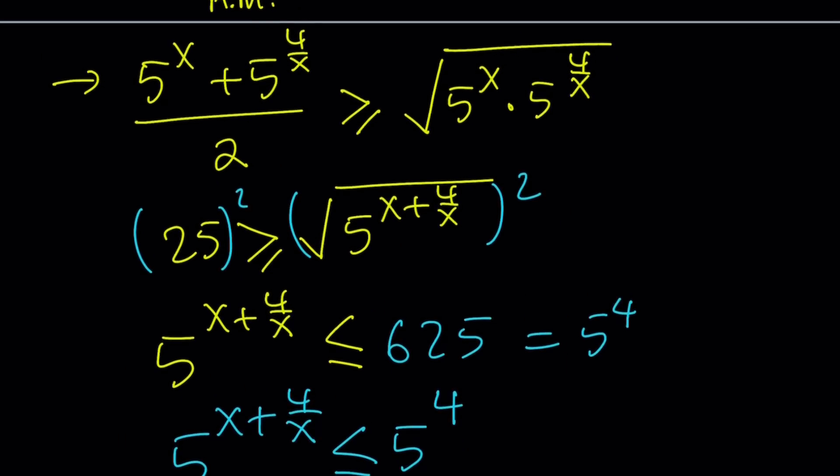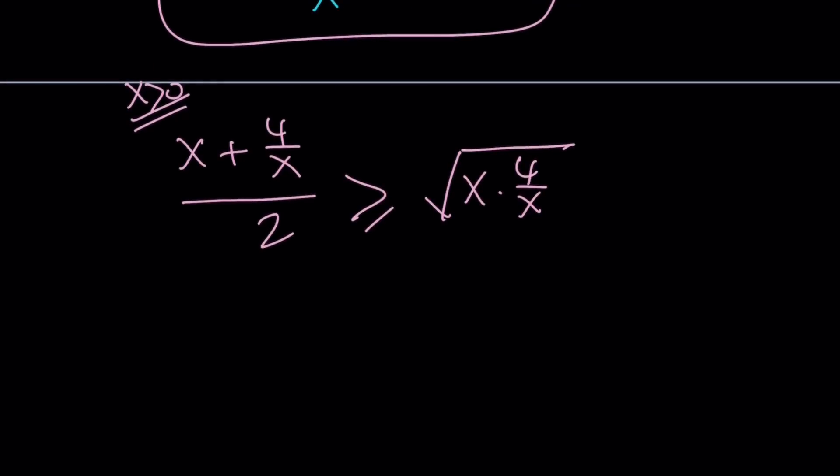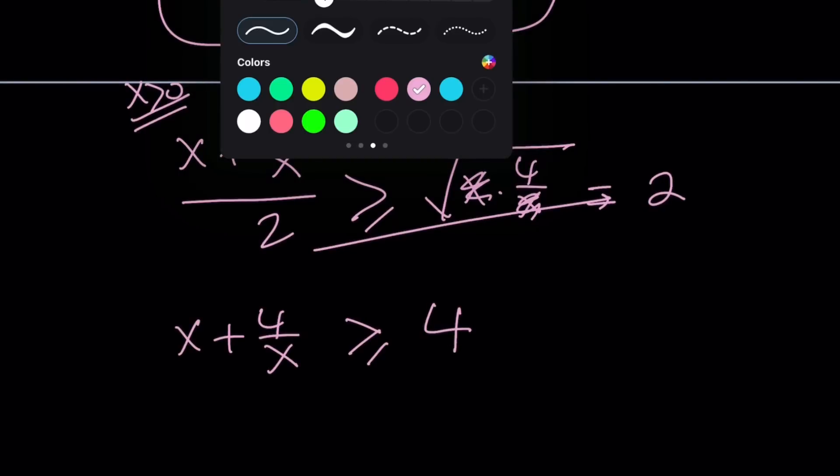If x is positive, in this case I'm assuming x is positive, the arithmetic mean must be greater than or equal to the geometric mean as before, by AM-GM. But x plus 4 over x, we don't know what it is. We just know it's less than or equal to 4 because of AM-GM. Let's assume x is positive and we got another inequality.